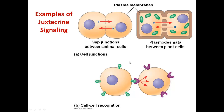However, juxtacrine signaling doesn't have to occur through a junction. Cells can also recognize one another through juxtacrine signaling where a signal attached to the outside of one cell is recognized by a receptor on an adjacent cell while the cells are in physical contact. This type of signaling is very common in the immune system, particularly in cells signaling the immune system that they need to be destroyed.